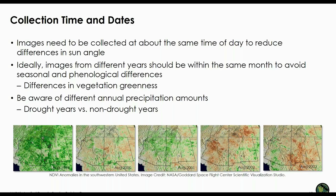Images need to be collected about the same time of day to reduce differences in sun angles. Ideally, images from different years should be within the same month to avoid seasonal and phenological differences. For example, if you choose an image in the dry season and one in the rainy season, you will see differences in vegetation greenness due to precipitation, not land cover change. Similarly, even if you choose images from the same time of year, be aware of different annual precipitation amounts — if one year experienced extreme drought and another normal rainfall, you will see vegetation differences due to rainfall rather than deforestation.